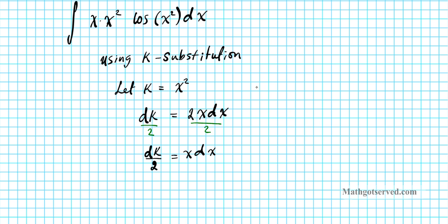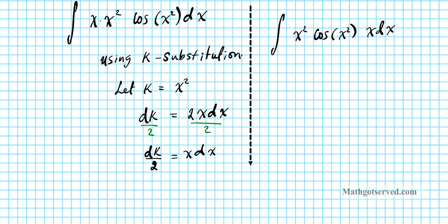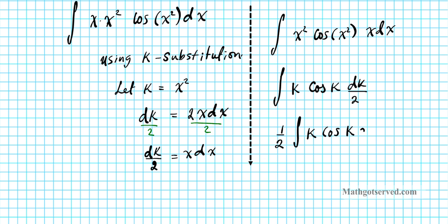Let me rewrite it to make the substitution obvious: x squared cosine(x squared) times x dx. The x dx becomes dk over 2, and both x squared terms are replaced with k. So we get the integral of k cosine(k) dk over 2, which equals one-half times the integral of k cosine(k) dk.